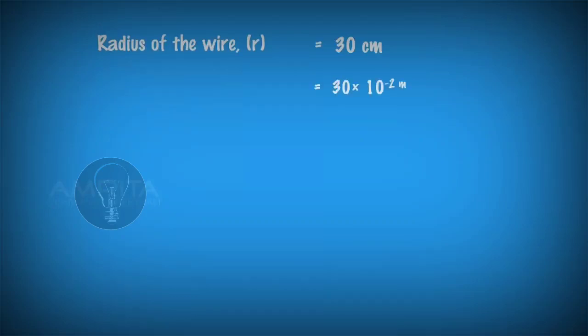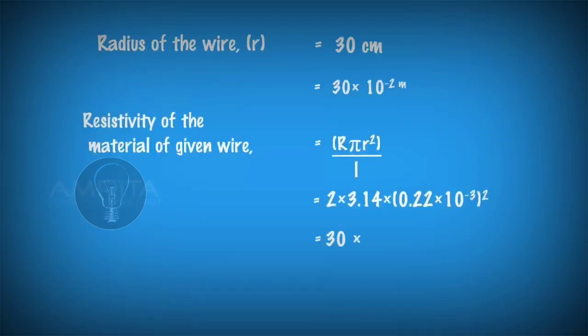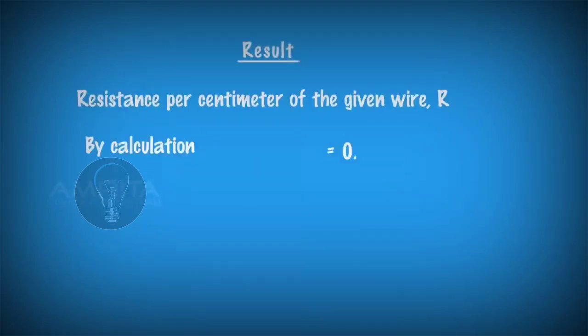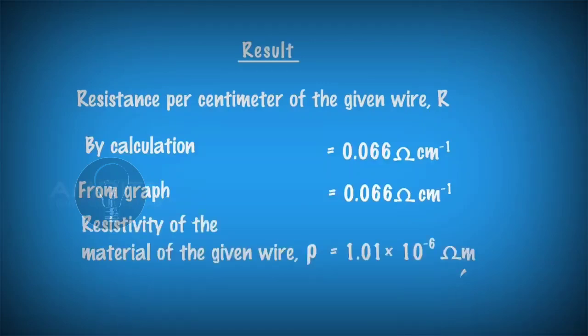Calculate the resistivity, specific resistance of the material of the wire. Resistance per centimeter of the given wire is 0.066 ohms per centimeter and resistivity of the material of the given wire is 1.01 into 10 raised to minus 6 ohms meter.